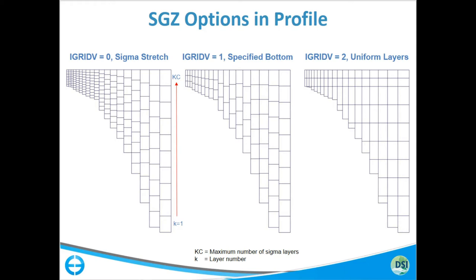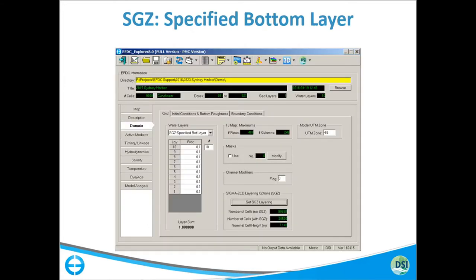That means your DZC, or relative layer thickness, changes from cell to cell. The DZC array for this cell is different from this cell, which is different from this cell. Every layer's DZC here is not the same as DZC there. All these metrics are computed once, and then after that we just use them as water levels change, cells are drying out and re-wetting. We have all the cell face metrics we need to generate the computational solution.